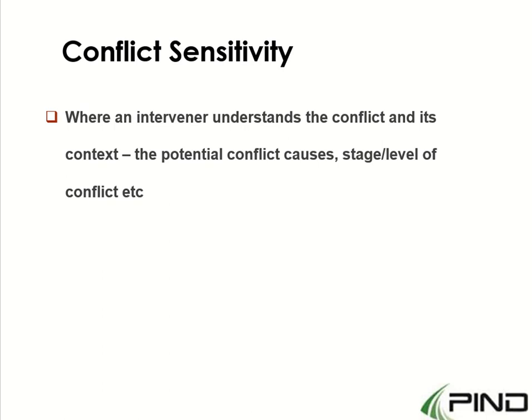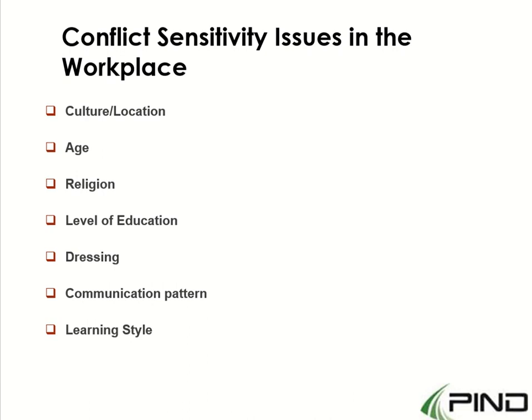In the workplace, there are certain issues that are potential conflict causes — conflict sensitivity issues. Things like a person's culture, location, where they grew up, age, religion, level of education, dressing, communication pattern, and learning style are all potential conflict causes. If not handled well, employees may fight over these seemingly little issues. Someone may feel slighted because they were thought too young, or because their religion was disrespected, or because someone felt they weren't educated enough.